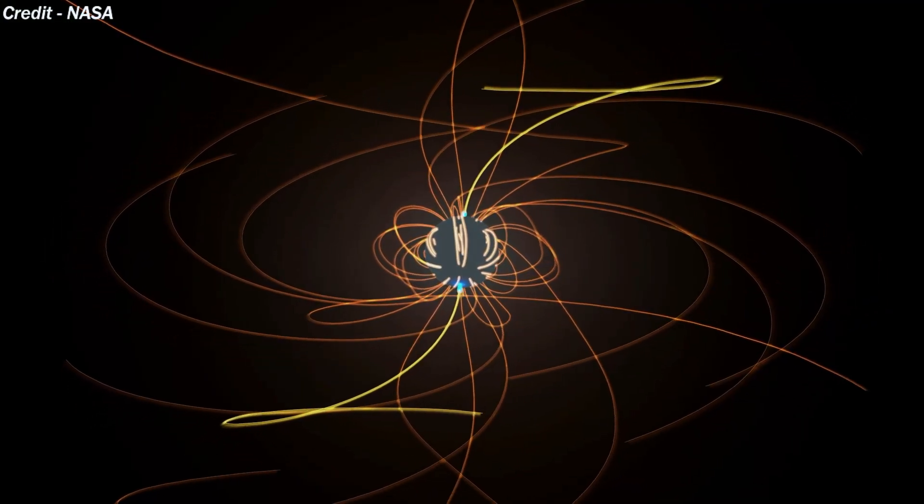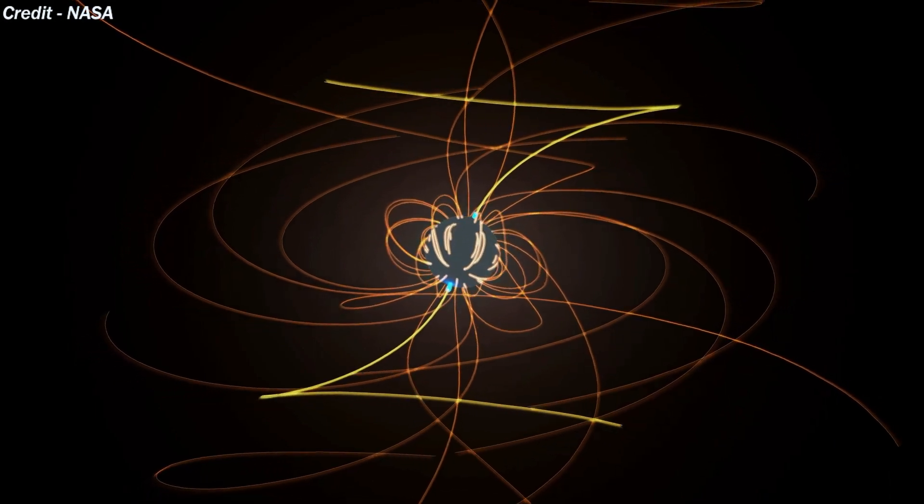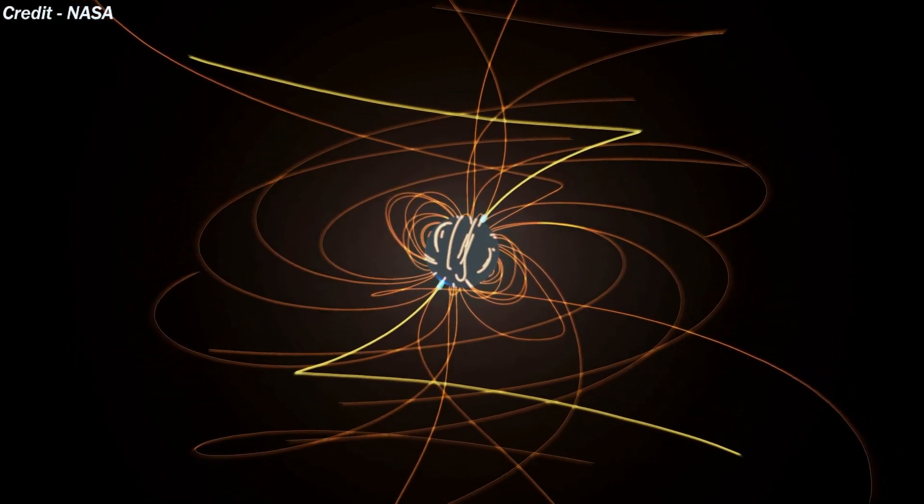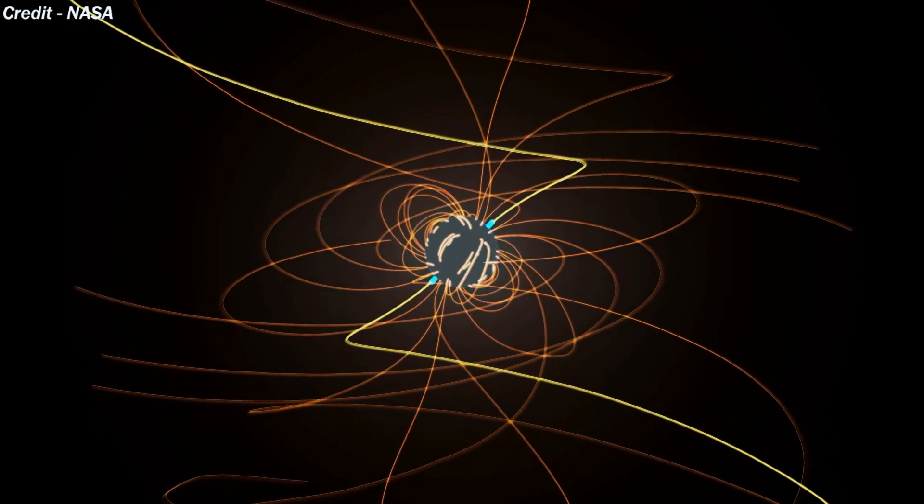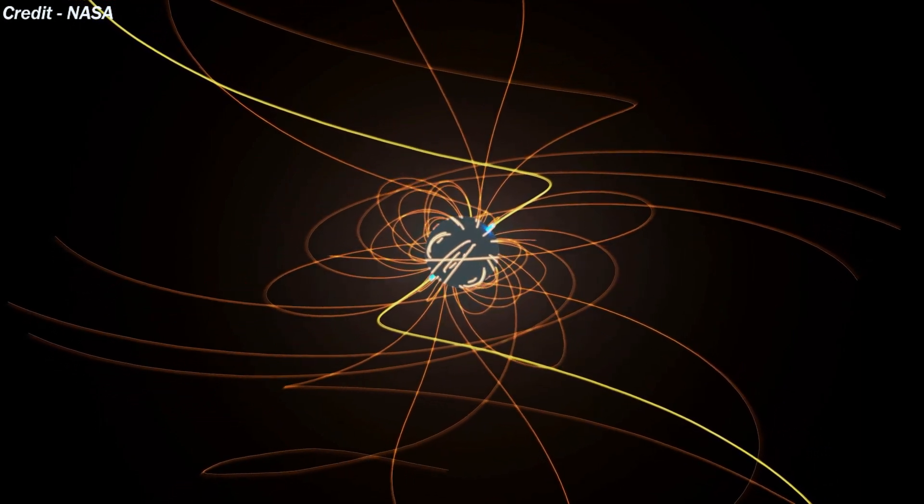Pulsars have very strong magnetic fields which funnel jets of particles out along two magnetic poles. These accelerated particles produce very powerful beams of light.